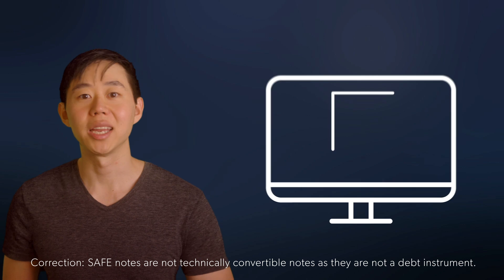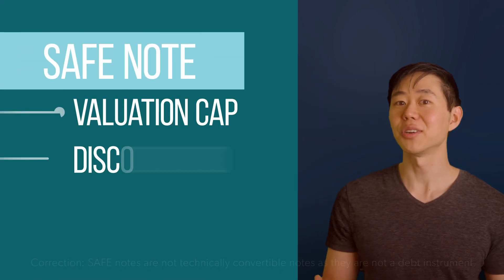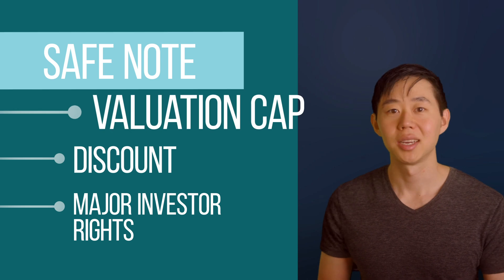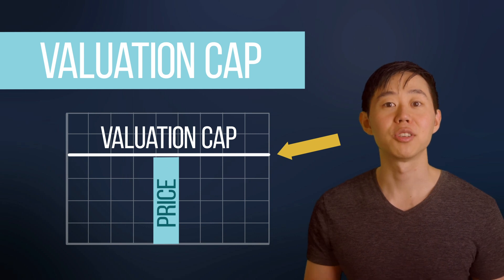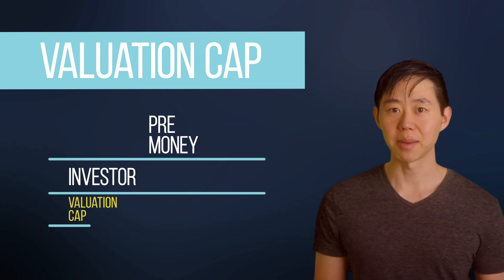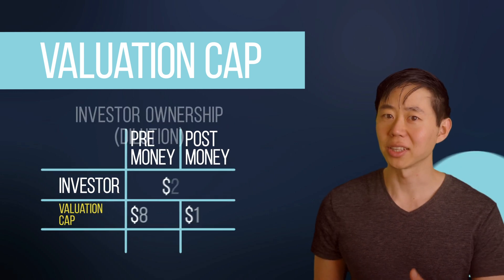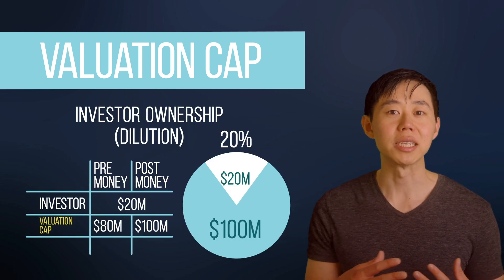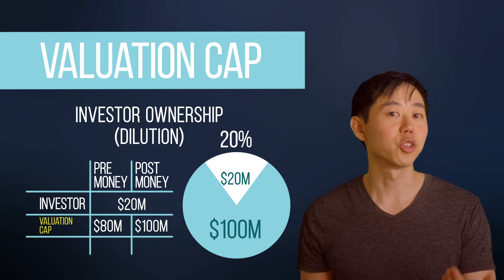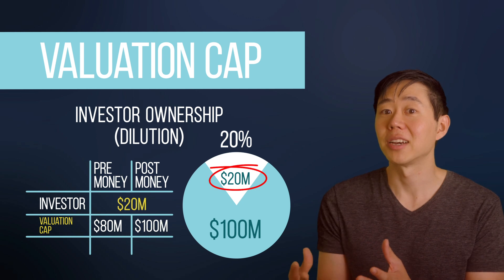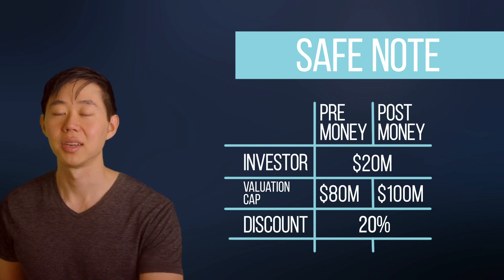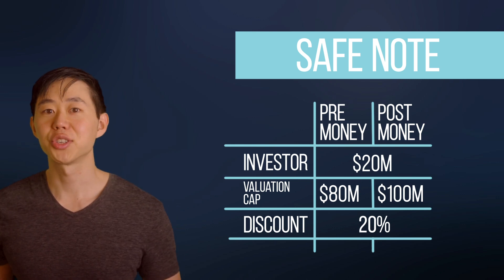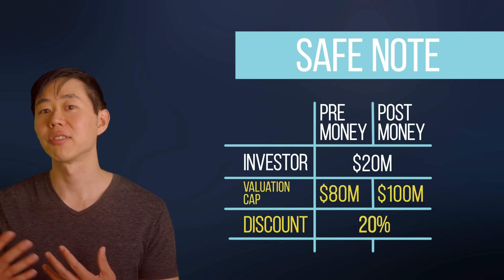It's becoming common to use an even more simplified convertible note structure called a safe note, which anyone can download online and use without lawyers. In a safe note, you only need to negotiate three things: the valuation cap, the discount, and prorata rights. The valuation cap dictates the highest price the investor will pay when the notes eventually convert into a priced round. Valuation caps can be set on a pre-money or post-money basis — it's generally cleaner to do it on a post-money basis so you can more easily calculate investor ownership and founder dilution, which is just the amount invested divided by the post-money valuation. Safe notes can also have a discount rate to the future valuation of the priced round, and investors choose whichever is the better deal for them.